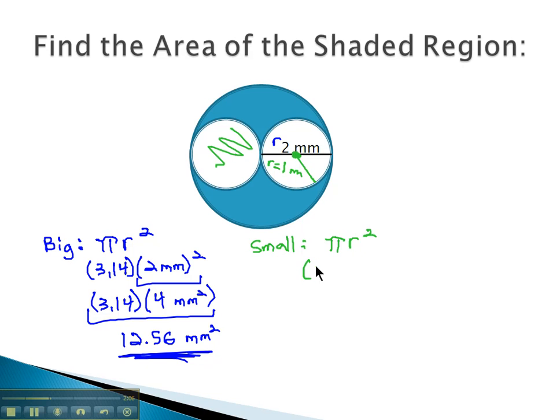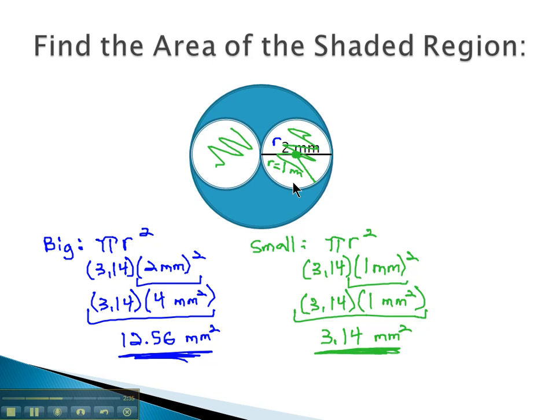So now we have pi, or 3.14, times the radius, which is 1 millimeter squared. Exponents first, we have 3.14 times 1 squared is 1 square millimeter. And then finally multiplying 3.14 times 1, we get 3.14 square millimeters for the area of each of those small circles.